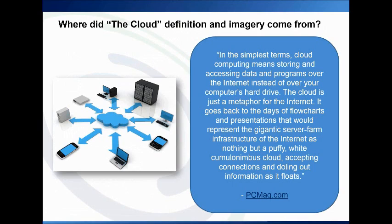Let's set the stage with just a definition here. Basically, the image of the cloud came from the earliest images of what the internet was — data stored somewhere else, not on your local computer. That's all it means, and it gets very confusing because it gets extrapolated from the definition of internet, and people just think it means some amorphous concept out there.